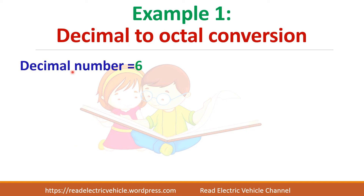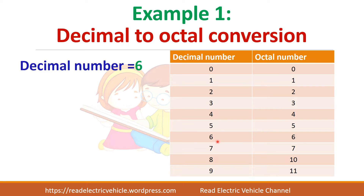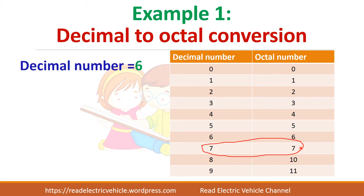The first example: decimal number is 6. This number is less than 7. Looking at the table of decimal numbers and octal numbers, up to 7 the decimal number and octal number are the same. Only after 7 does the octal number change — after 7 it goes to 10, then 11, and so on.